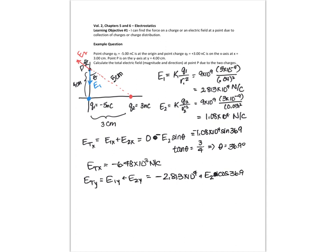So it's minus 2.813 times 10 to the 4th plus 1.08 times 10 to the 4th times the cosine of 36.9. And so this ends up to be negative, and it's 1.949 times 10 to the 4 newtons per coulomb.